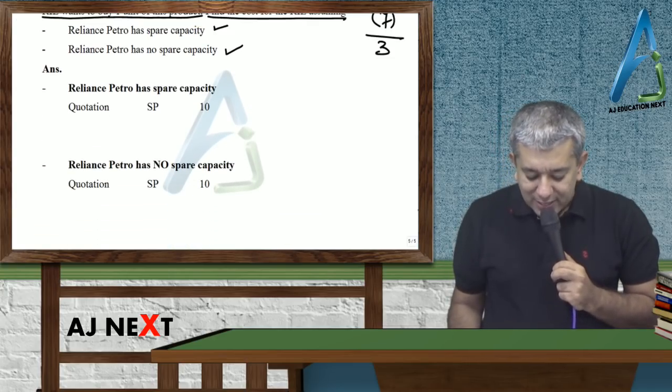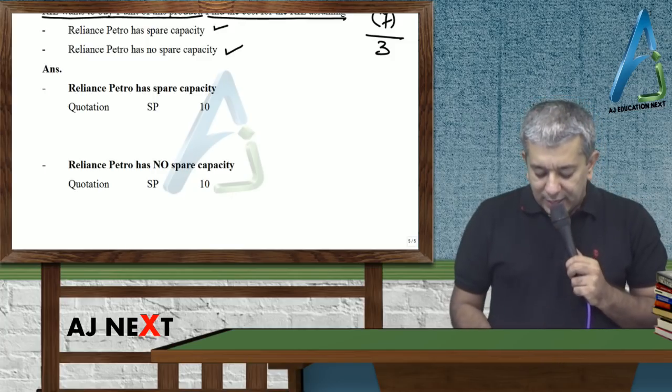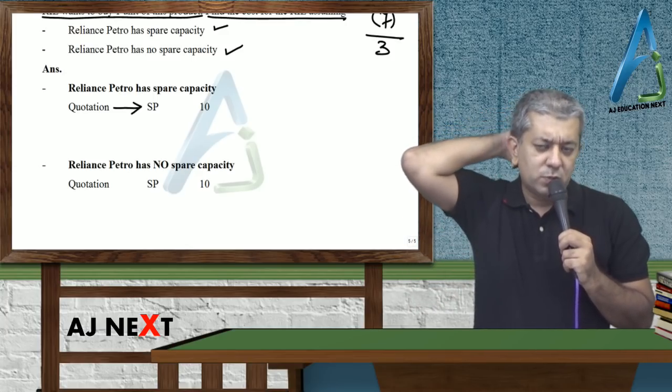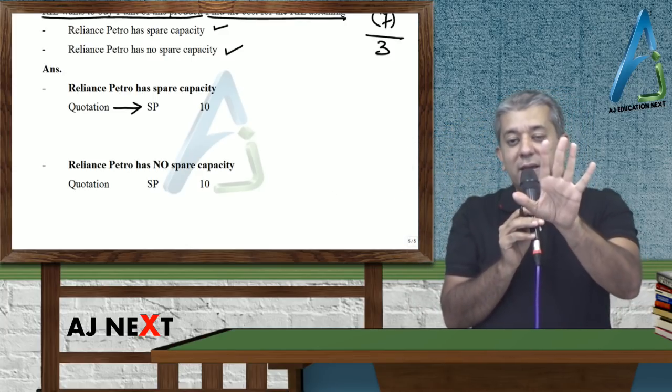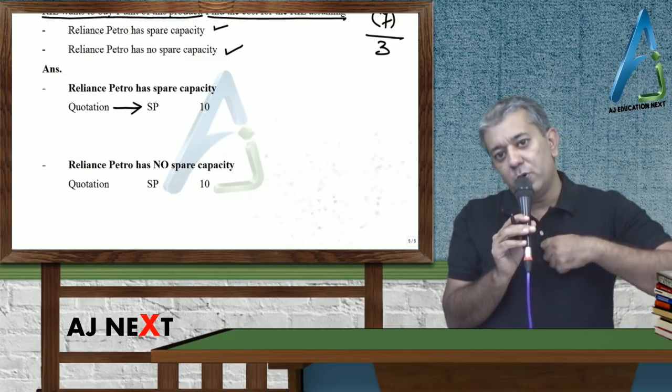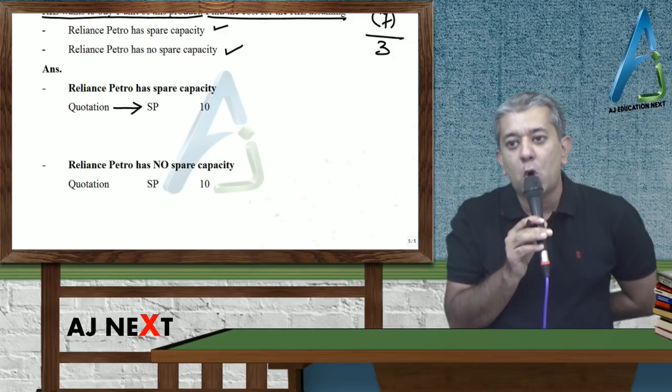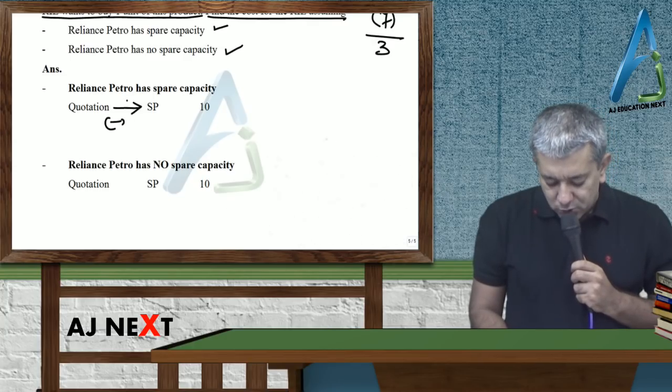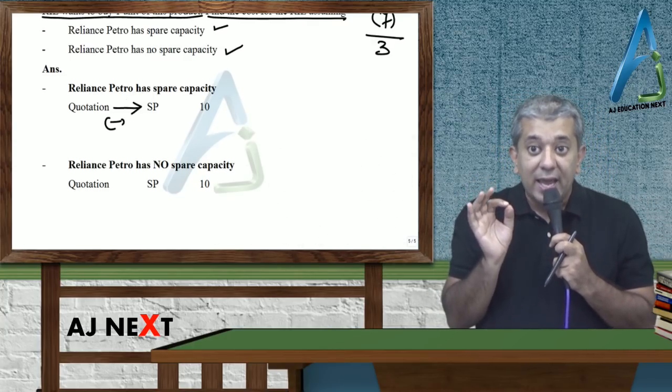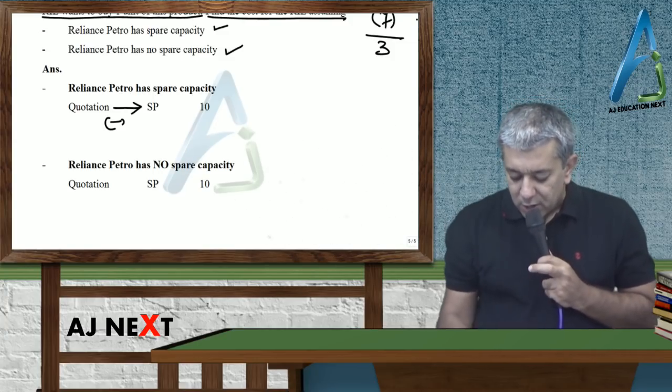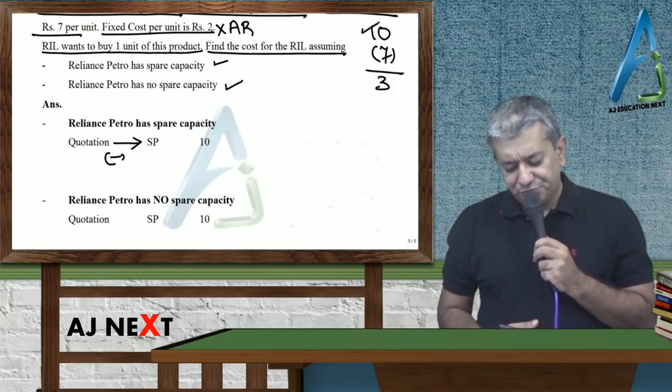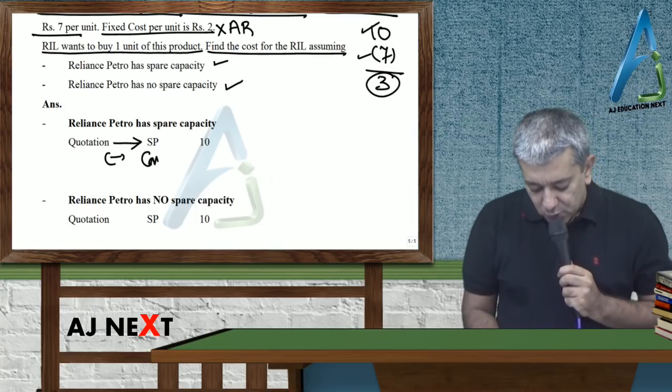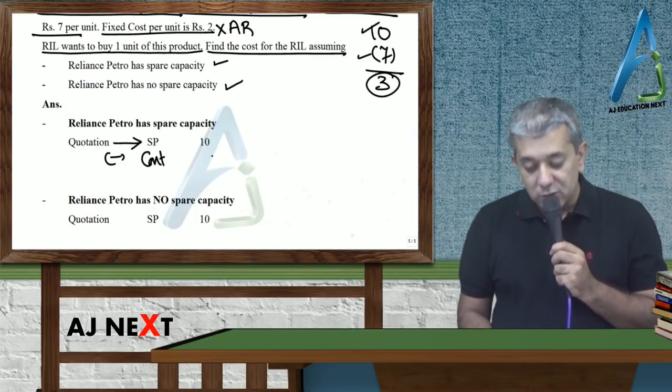First, Reliance Petro has spare capacity. Toh ab zara souchou. Reliance ne Reliance Petro ko puchha: Bhai, ek unit toh hum ko bech de. Toh Reliance Petro ne bola 10 rupee de. Toh tum RIL hai, who is buying the product. Toh tum log ne usko 10 rupee dee diya. Toh apna cost, apna cost joh hai, kitne rupees ka lag gaya? Ten rupees. Lekin ab zara souchou. Reliance Petro ke paas spare capacity hai. Toh dekho, woh product 10 rupee mein bechega. Uska kharcha kitne ka hai sa? Toh, woh 3 rupee ka mayega na. So therefore, less contribution earned by Reliance Petro, kitne rupees ka? Three.